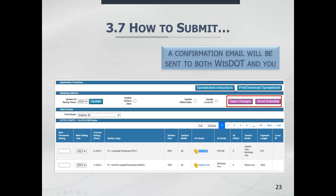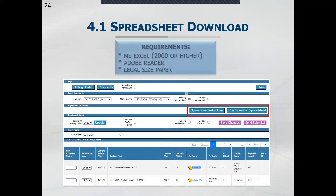Once you've completed your pavement ratings and fixed all errors, it's time to save and submit. Save often, send once. Once you're done and you send your submittal, you will get a confirmation email both to Wisconsin DOT and to yourself.